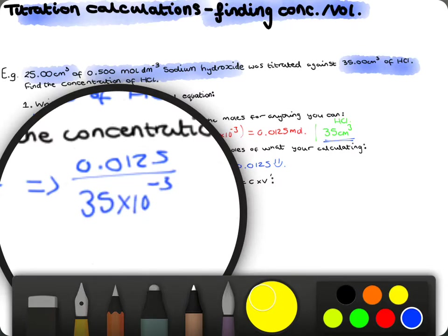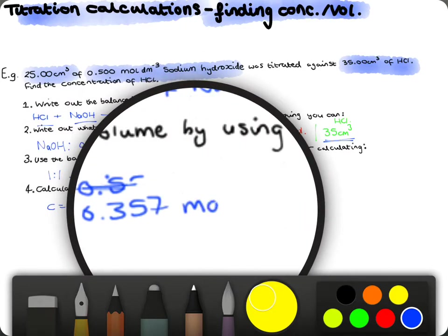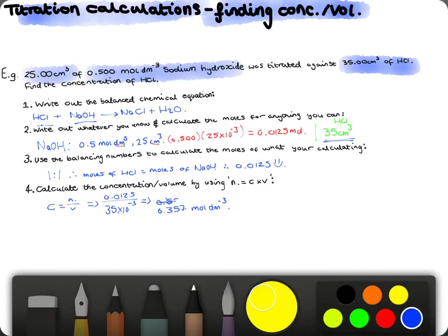Or you may like to just do 35 and then times the top by 1,000, but I think this way is a bit nicer. And this will give us our concentration, which, if you plug into your calculator, is 0.357, and finish it off with the units, moles per decimeter cubed. And there you go. That's how you can calculate the concentration using your titration data.